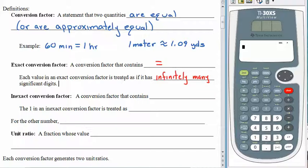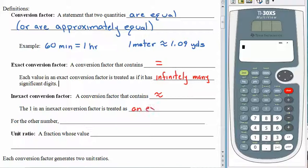An inexact conversion factor is a little bit different — it has the approximately-equal symbol in it, like one meter is about 1.09 yards. The 1, the first part of the inexact conversion factor, is treated as an exact value, so we don't have to worry about significant digits associated with the 1. But the other number, we have to care about significant digits — that's our approximation, and we are going to count those significant digits.